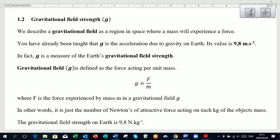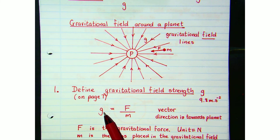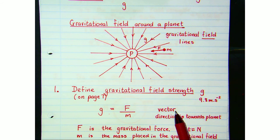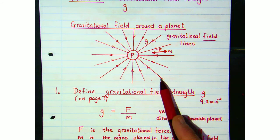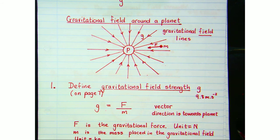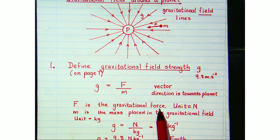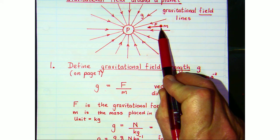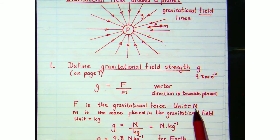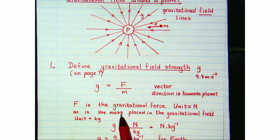Gravitational field strength is the force per unit mass. It is a vector quantity because gravitational fields have direction — the direction of a gravitational field is always towards the planet. The force F is the gravitational force that the mass M experiences when brought into the gravitational field. The unit of force is the newton.